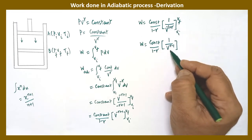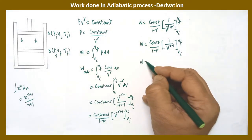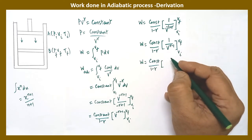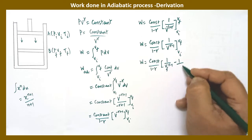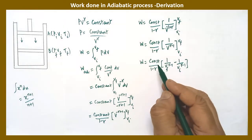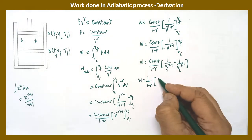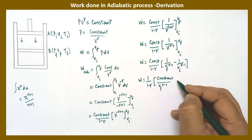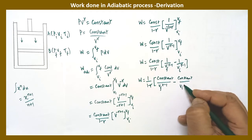Substituting the limits, W = (constant / (1−γ)) × [1/Vf^(γ−1) − 1/Vi^(γ−1)]. Taking the constant inside the bracket, W = (1/(1−γ)) × [constant/Vf^(γ−1) − constant/Vi^(γ−1)]. From the equation of state of the adiabatic process, PV^γ = constant, so for both positions: Pi·Vi^γ = Pf·Vf^γ = constant.